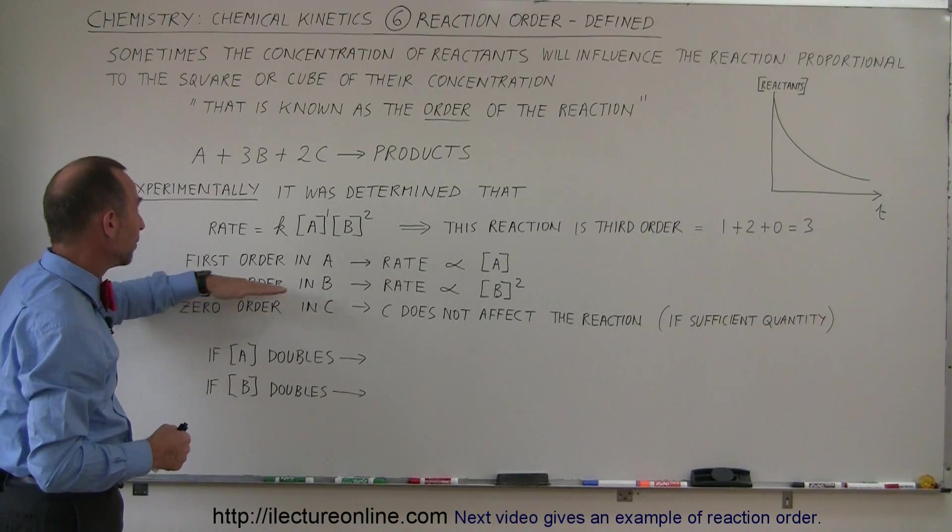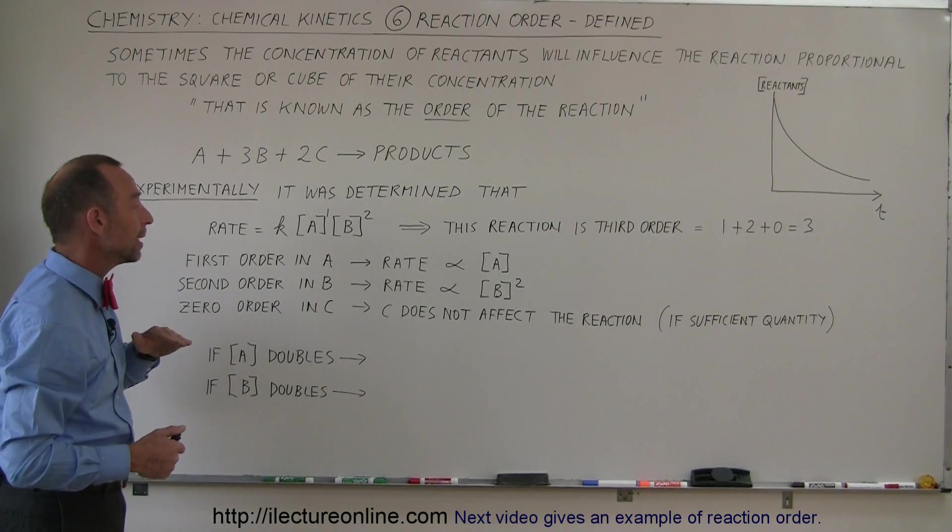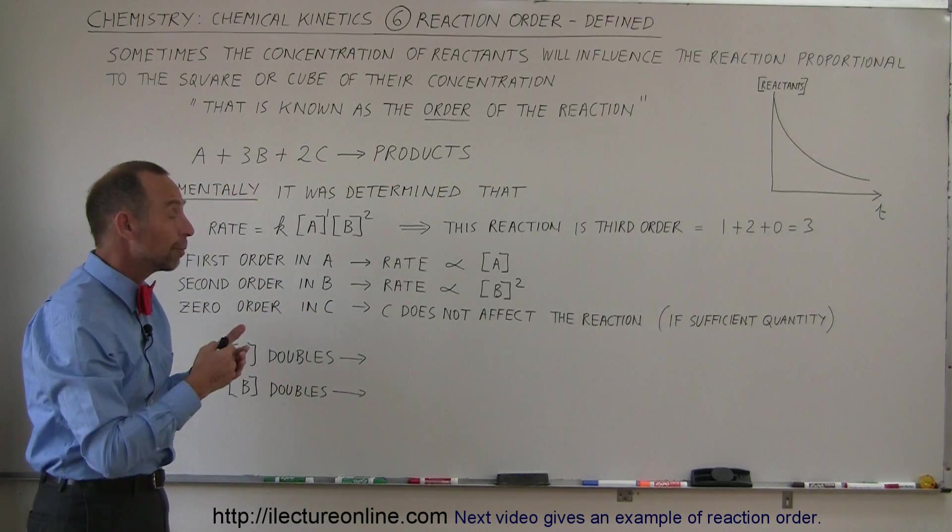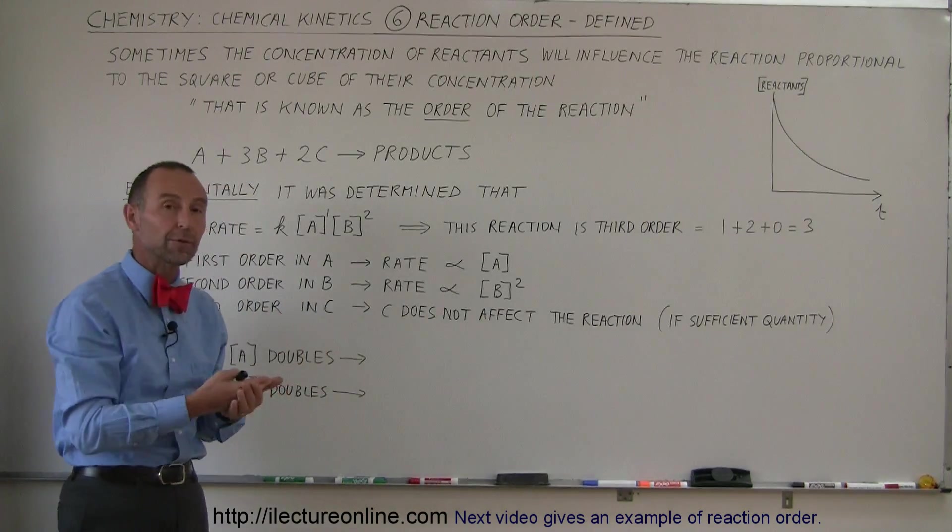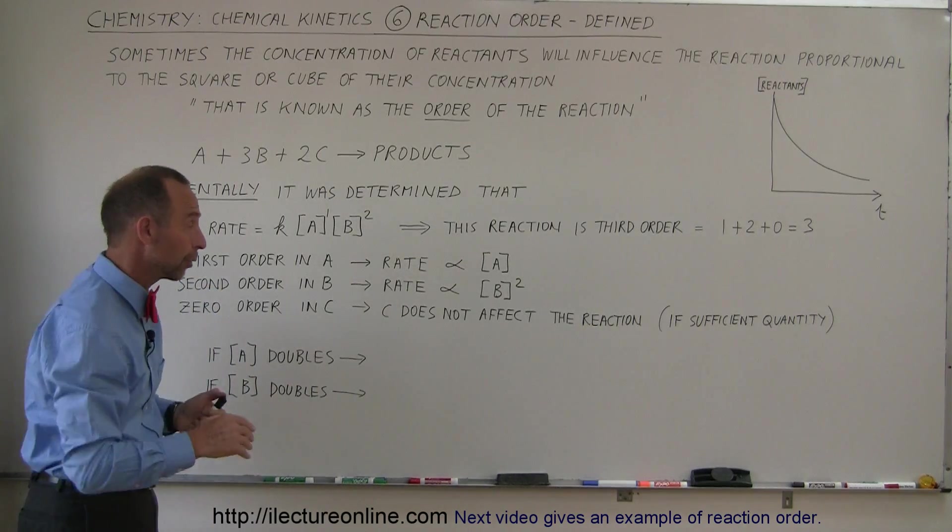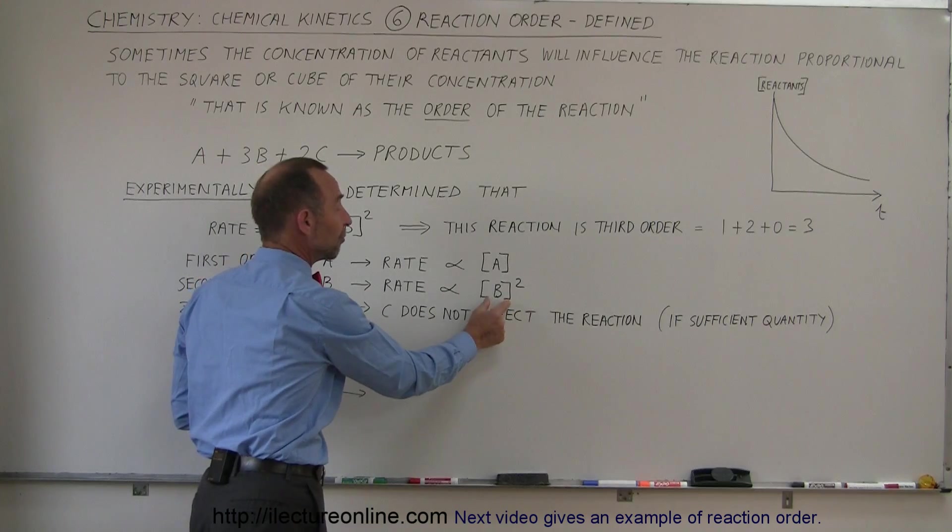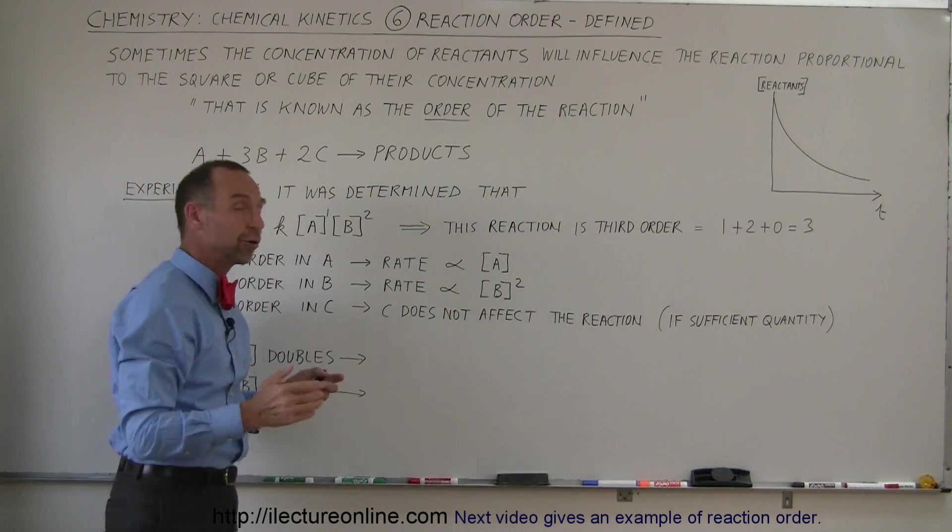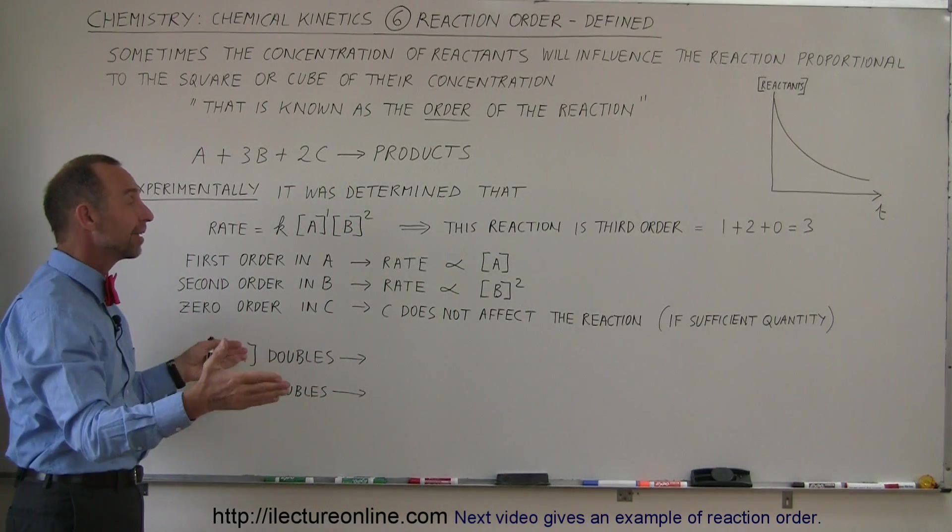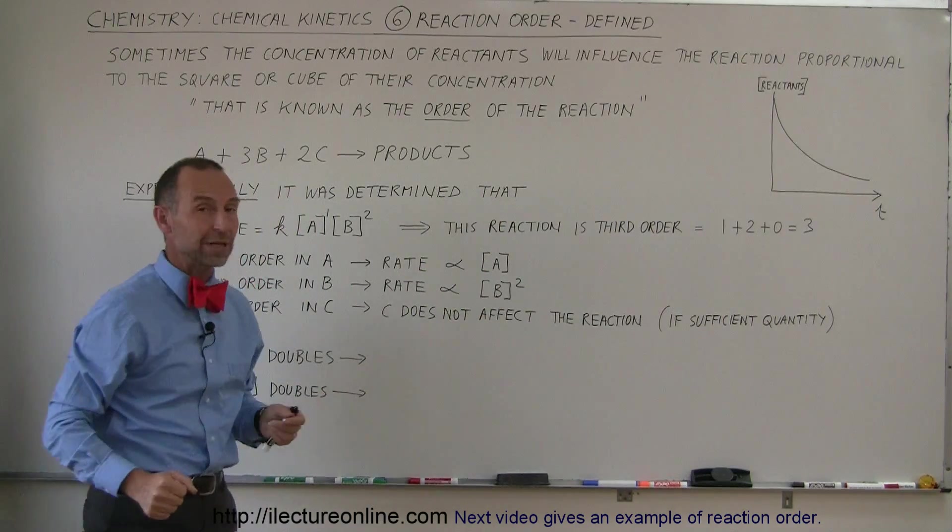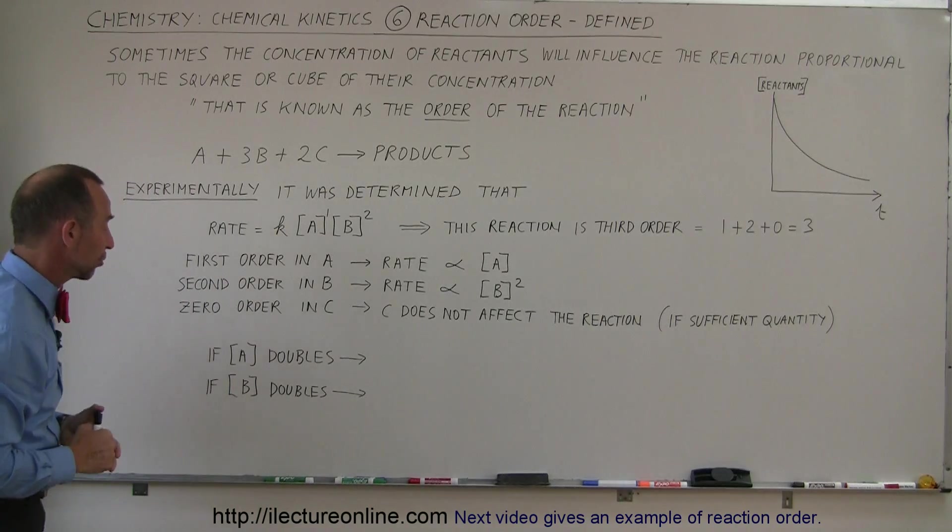Also here we have B being second order in B. That means if you double the concentration of B the reaction will be 4 times as fast. If you triple the concentration of B it'll be 9 times as fast and so forth. In other words the rate of the reaction is proportional to the concentration of B squared. And of course since they're both there we then say that the order of this reaction is 1 plus 2, 0 for C, a total of 3 for this particular reaction.